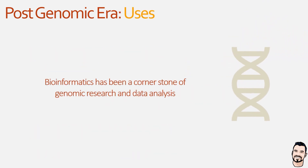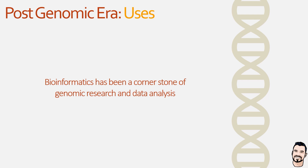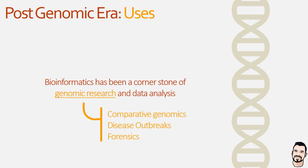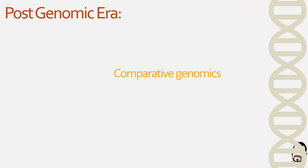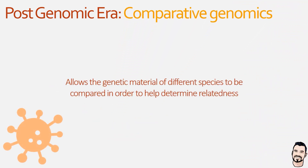A cornerstone of this research is bioinformatics — an interdisciplinary field that combines biology, computer science, maths, and statistics to analyse and interpret complex biological data. This has propelled genomic research in areas such as comparative genomics, disease outbreaks, and forensics. Bioinformatics has been essential in comparative genomics, allowing us to precisely compare the genomes of different species to identify functional and non-functional sections, and more importantly to identify both differences and similarities that help determine the relatedness of two species.